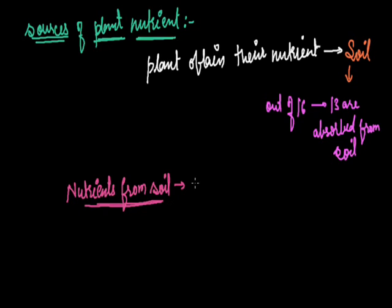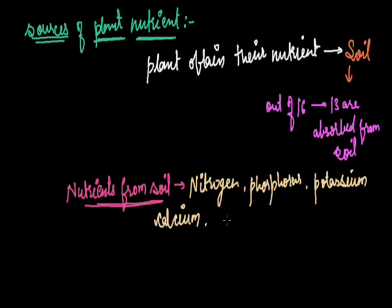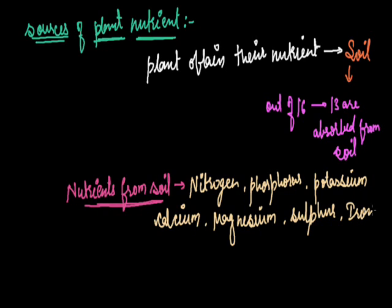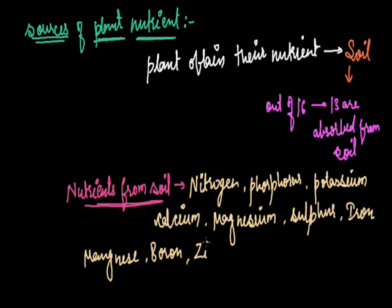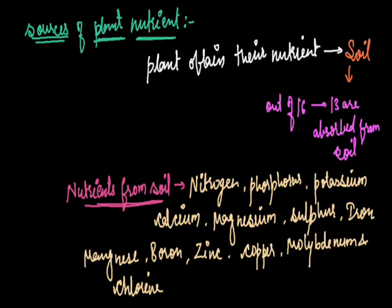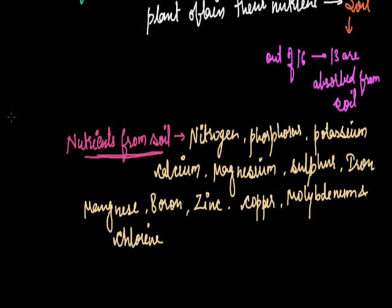The nutrients absorbed from soil are: Nitrogen, Phosphorus, Potassium, Calcium, Magnesium, Sulfur, Iron, Manganese, Boron, Zinc, Copper, Molybdenum, and Chlorine. All 13 of these nutrients are absorbed by plants from the soil.